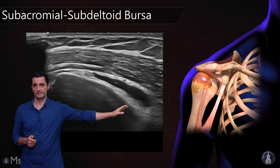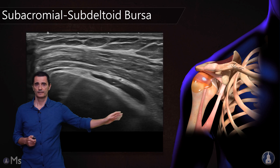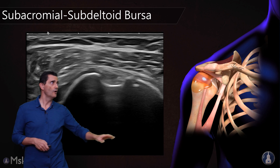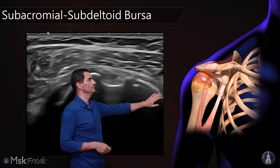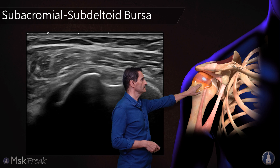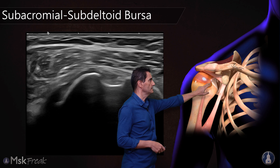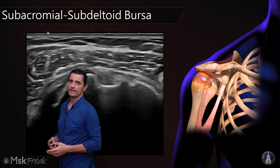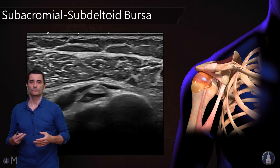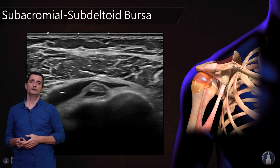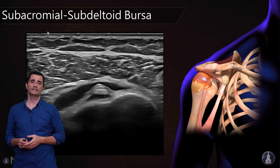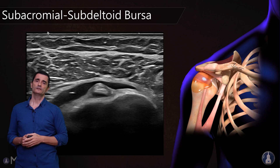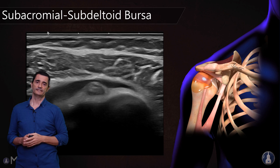This is a pathologic case. When we are anterior over the tendon of the long head of the biceps, remember that the bursa covers the long head of the biceps. We can see when there is a fusion, this bursa reaching and covering this tendon of the long head of the biceps.